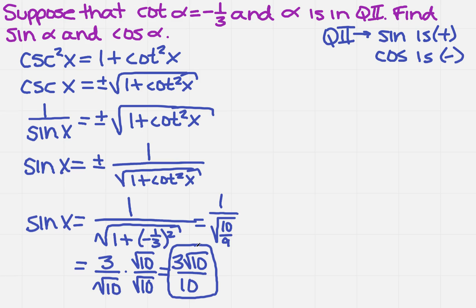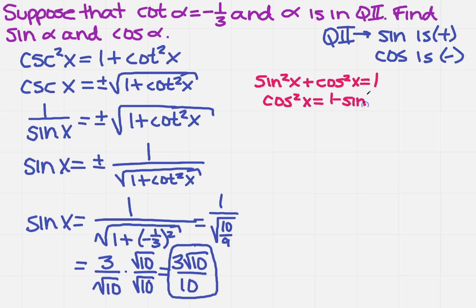I still need the cosine. Do we have a rule about cosine? We do: we know that sine squared of x plus cosine squared of x equals 1. That means cosine squared x equals 1 minus sine squared x. But if I need just cosine, I have to take the square root of both sides, so cosine of x equals plus or minus the square root of 1 minus sine squared x.